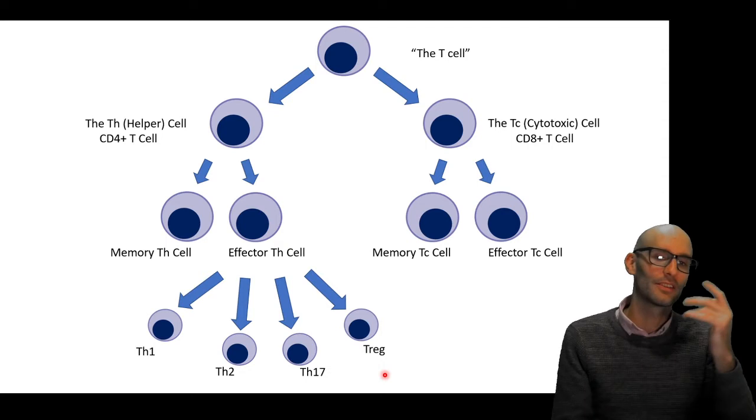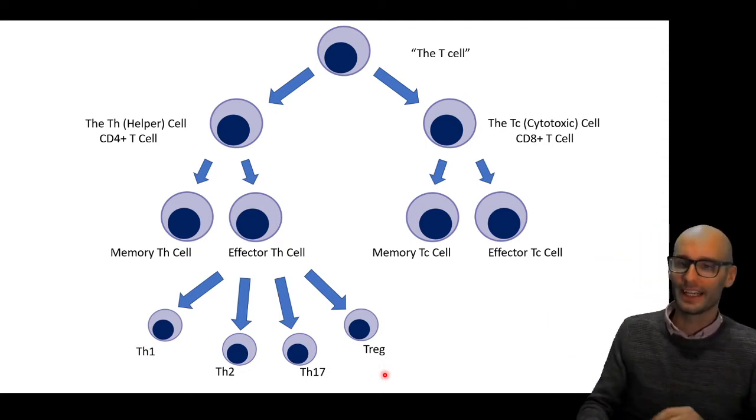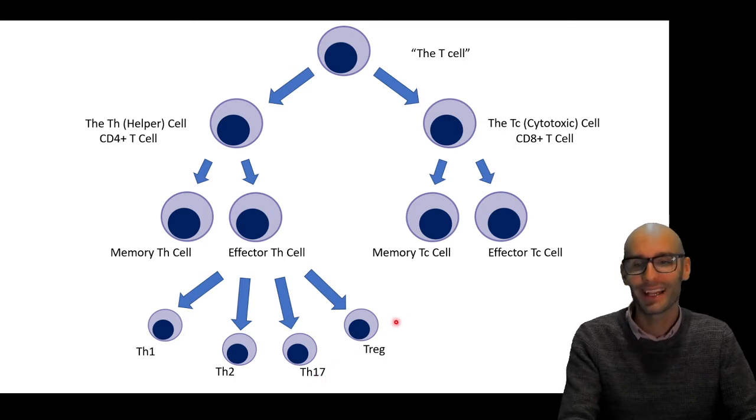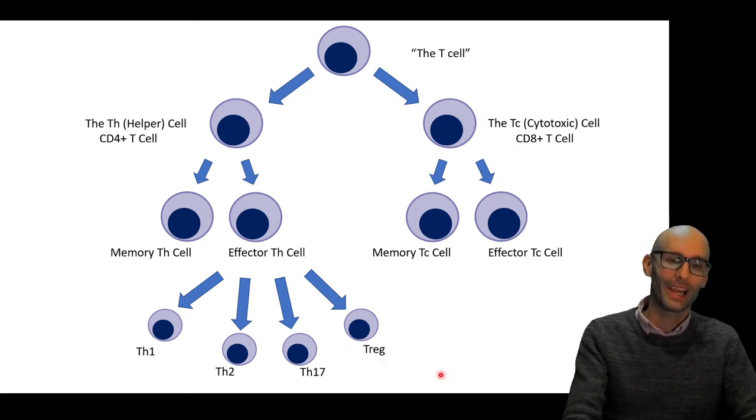So why am I talking about putting a discrete system of Roy G. Biv over a continuous system? And the reason is, here are the T cell types. We've got cytotoxic T cells, we've got T helper cells, and then we break them down into Th1, Th2, Th17, and Tregs.